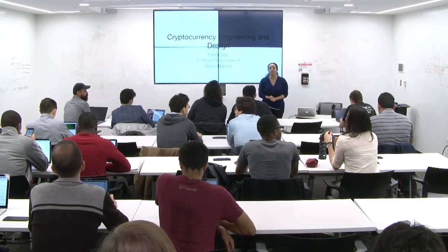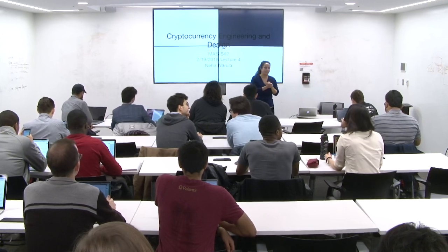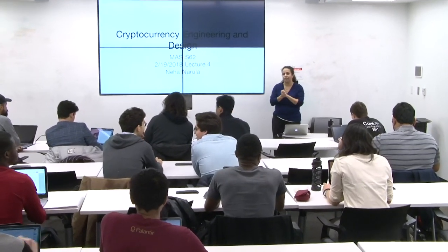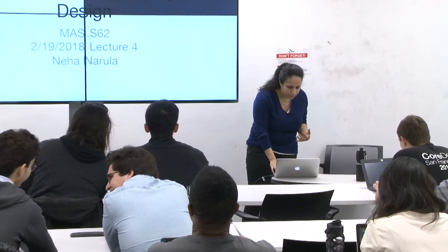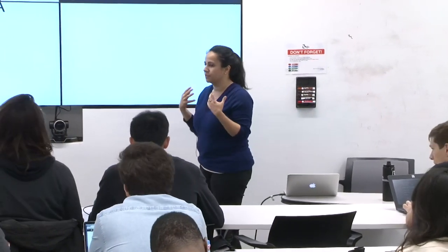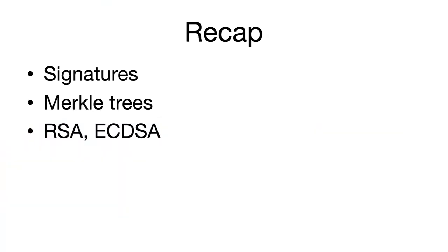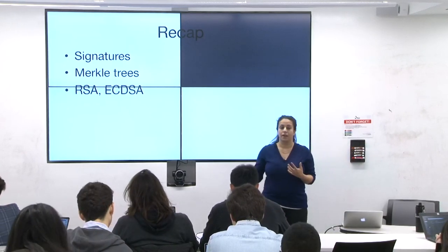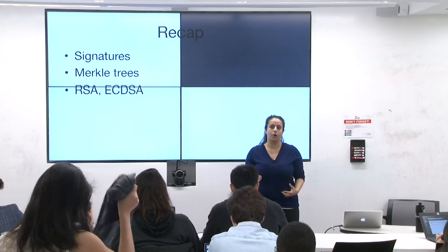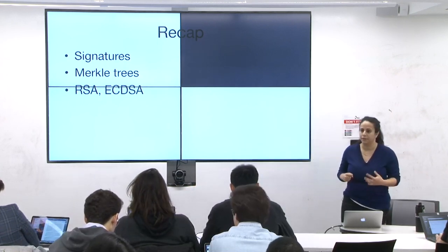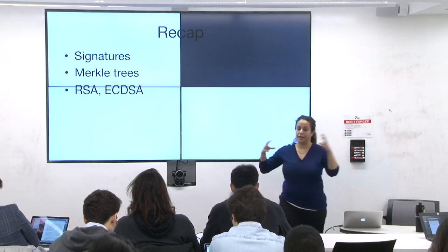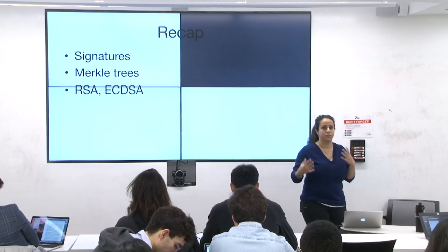OK, let's get started. I hope everybody had a great long weekend. Today we're going to be talking about transactions. Just to recap where we've been so far, Taj has explained signatures in Bitcoin — in particular RSA and ECDSA — and told us a little bit about Merkle trees. These are some of the underlying primitives we need to know about in order to understand how most of the blockchains today are constructed. Now let's start to put them together and understand what goes into a blockchain.